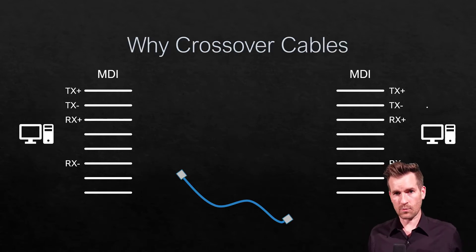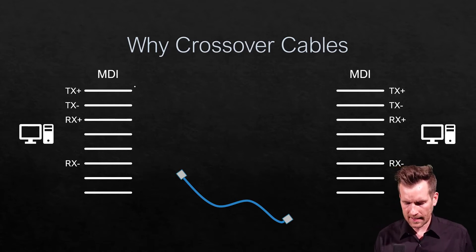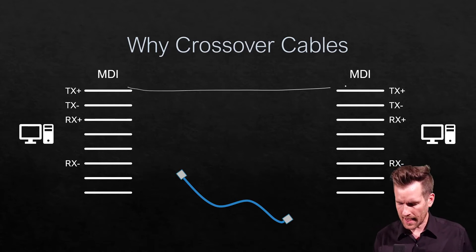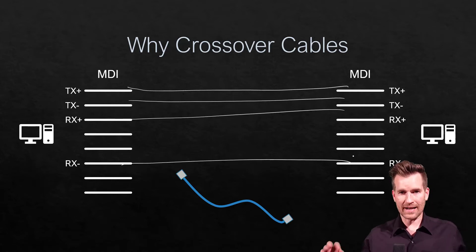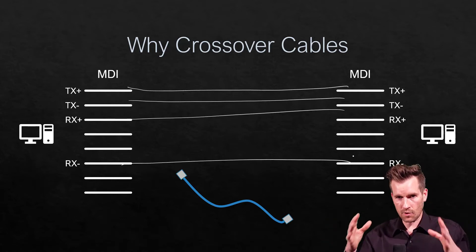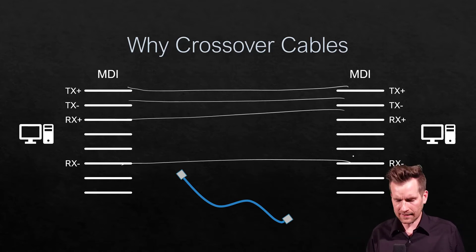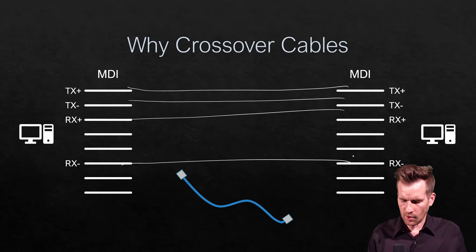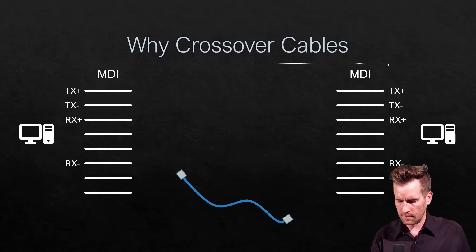The problem arises when we connect MDI to MDI equipment. If we connect two MDI devices with a straight-through cable, both are trying to transmit on the same line with no one listening, and both are trying to receive on the same line with no one talking. That's why we use a crossover cable.